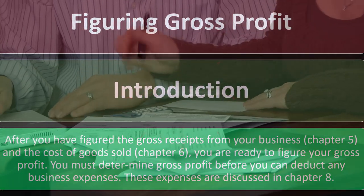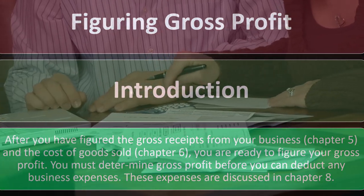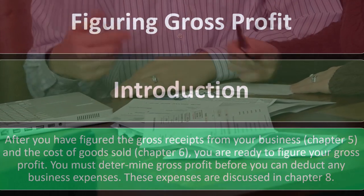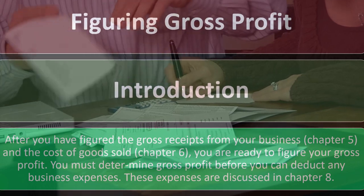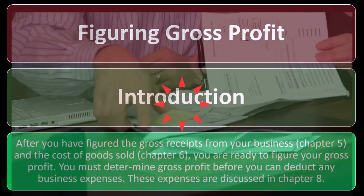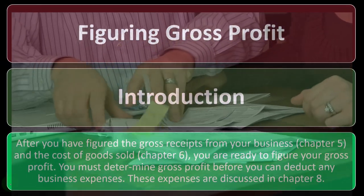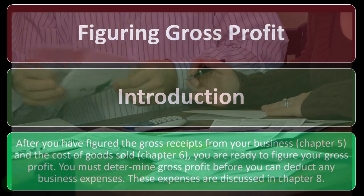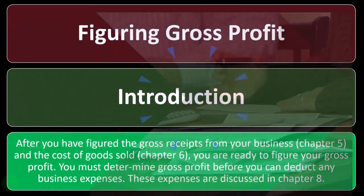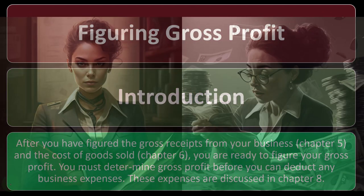After you have figured the gross receipts from your business — chapter 5 — and the cost of goods sold — chapter 6 — you are ready to figure your gross profit. It's just called gross profit, nothing scary about it. You must determine gross profit before you can deduct any business expenses. Those business expenses come after this step and are discussed in chapter 8.